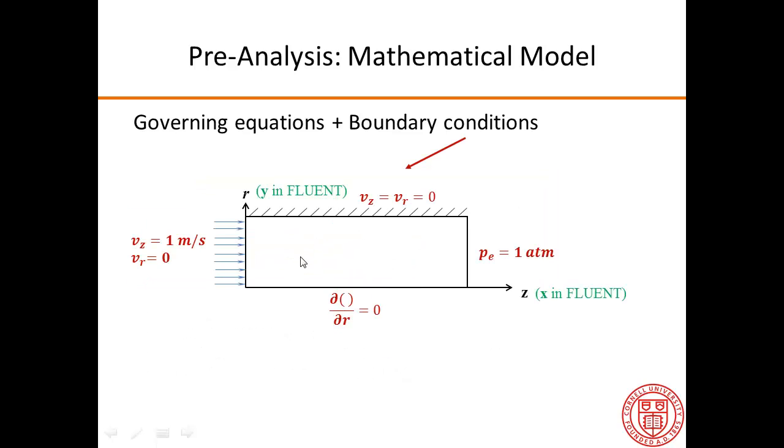Our domain is a rectangle. Since we have no variation in the circumferential direction, we have two independent variables: the axial coordinate and the radial coordinate. The axial coordinate goes from 0 to the length of the pipe, and the radial coordinate goes from 0 to the radius of the pipe.